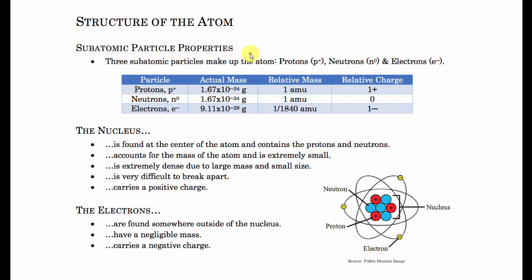The atom is made up of three subatomic particles: protons, neutrons, and electrons. When we look at protons and neutrons, they have almost an identical mass — their masses are almost exactly the same. There is a slight variation if you keep going with the decimal places, but for the most part protons and neutrons have pretty much the same mass.